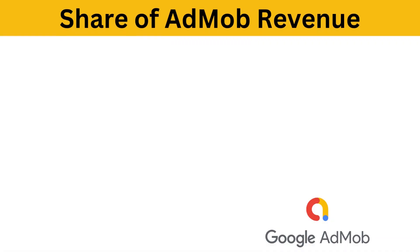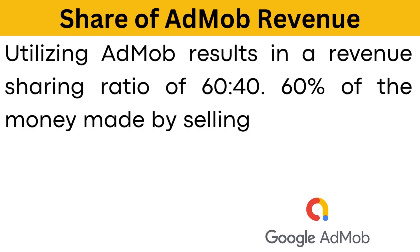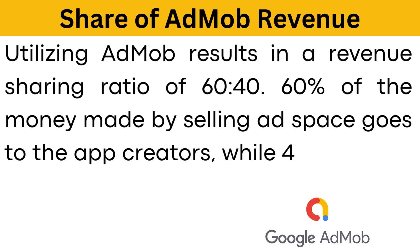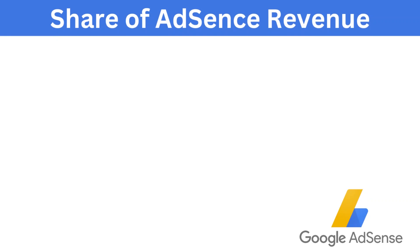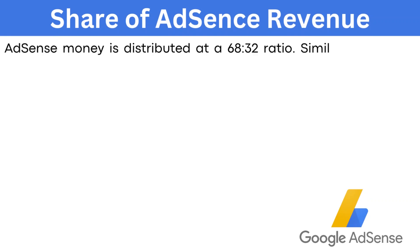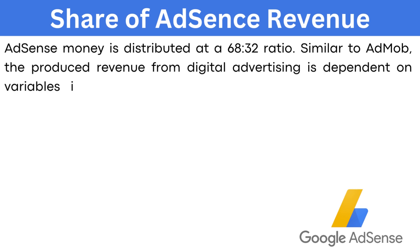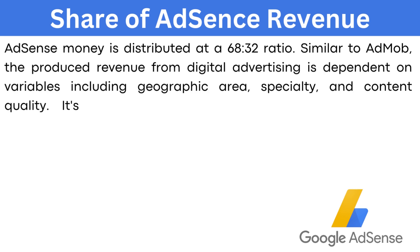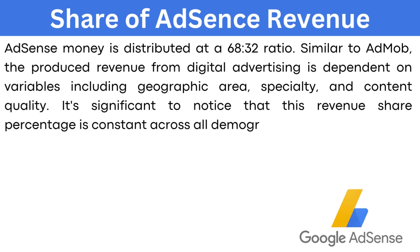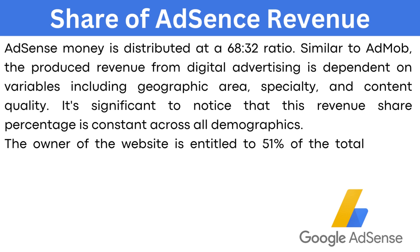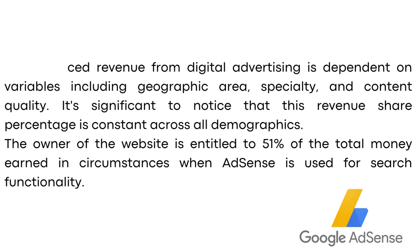AdMob share of revenue: utilizing AdMob results in a revenue sharing ratio of 60-40. 60% of the money made by selling ad space goes to the app creators, while 40% goes to Google for AdMob services. AdSense share of revenue: AdSense money is distributed at a ratio of 68-32. The produced revenue from digital advertising is dependent on variables including geographical data, niche, and content quality. It's significant to notice that this revenue share percentage is constant across all demographics. The website owner is entitled to 51% of total money earned in circumstances where AdSense is used for search functionality.